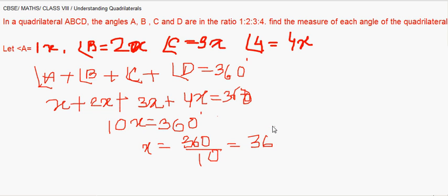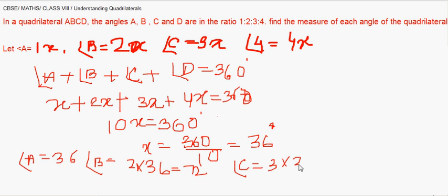So now A we had taken as x. So angle A will be 1x, that is 36. Angle B will be 2x, so it is 2 into 36, that's 72. Angle C is 3x, so it is 3 into 36, that's 108. And the rest that is angle D will be 4 into 36 and that's giving 144 degrees.